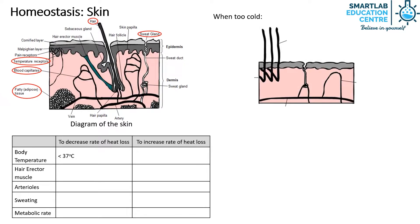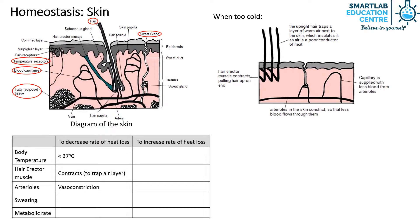the body temperature back to normal. The hair erector muscle starts to contract, pulling hair up on end. The upright hair traps a layer of warm air next to the skin, which insulates it, as air is a poor conductor of heat. The arterioles in the skin will constrict, also known as vasoconstriction, so that less blood flows through it